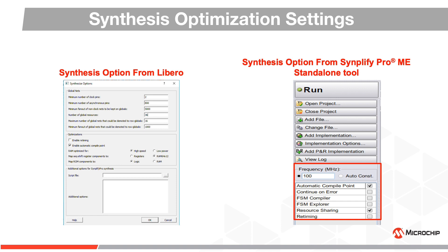All these options can be applied to the design globally using the checkboxes shown here, or selectively using attributes in the HDL or constraint files. See the user manual for full details.